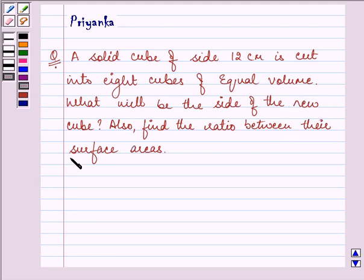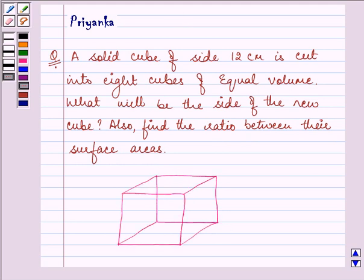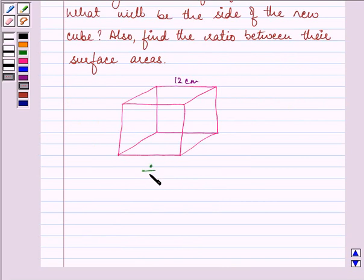Also find the ratio between their surface areas. So here the question says that let this be a solid cube measuring 12 cm each. Now this cube has to be divided into 8 cubes of equal volume. So that means the volume of these cubes is obviously smaller than this bigger one. We need to find out the side of this cube and then we need to find out the ratio between their surface areas.